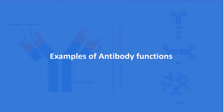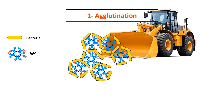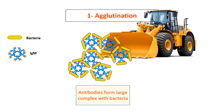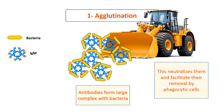Now we will have examples of antibody functions. Firstly, agglutination. Here the antibodies form a large complex with bacteria. This complex neutralizes the bacteria and facilitates their removal by phagocytic cells.